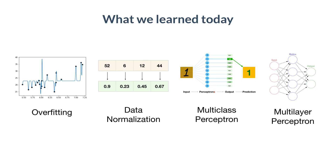This is probably the densest video we're going to make and we covered a ton of material. We covered overfitting, data normalization, building a multi-class perceptron, and a multilayer perceptron. But we still haven't squeezed out all the performance we can from a dataset like this — to get that final ounce of performance, we're going to have to build a convolutional neural network. Stay tuned for the next video.